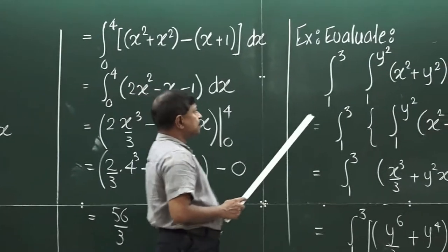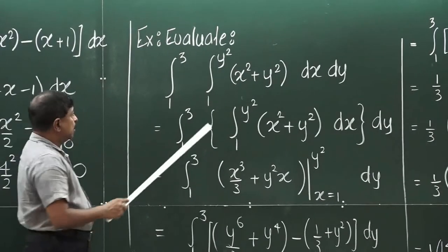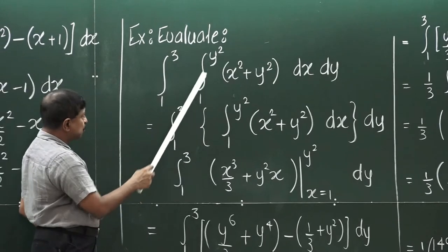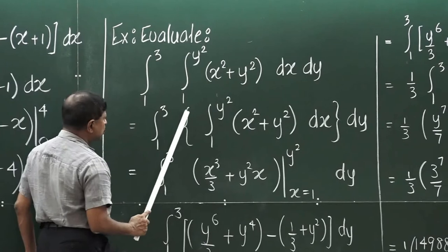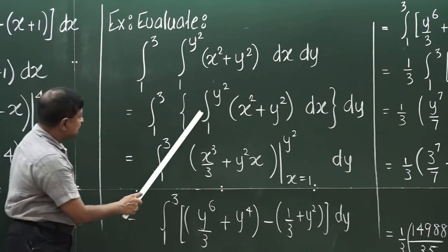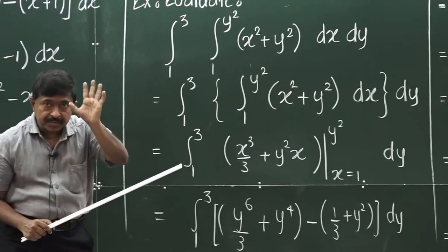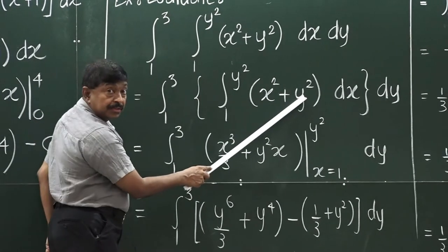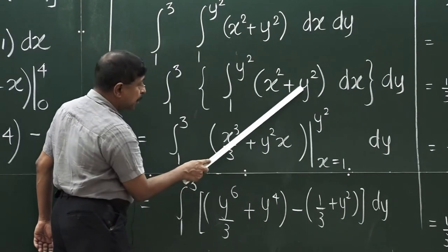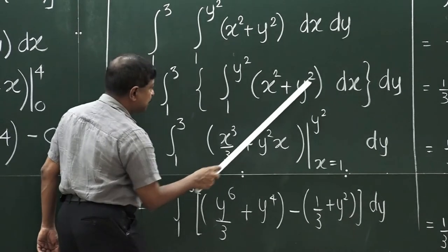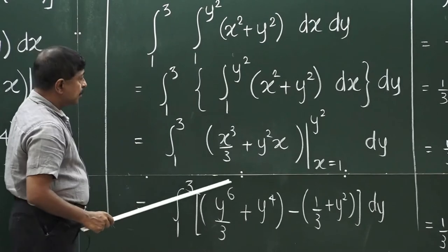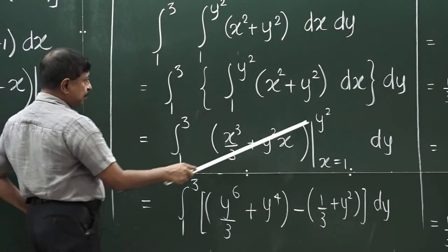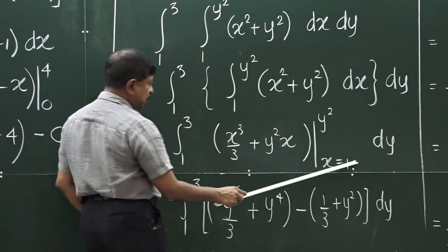Now the third example — the integrand again has both variables. Here the first variable is x, so you may expect some y in the limits of that integral, and indeed you have it. For clarity, introduce a pair of braces to separate the integrals. The variable is x, so the integral of x³ is x³/3. Since x is the variable of interest, keep y as a constant, giving y²x. The limits are from 1 to y². Plug in y² for x to get y⁶/3. Plug in y² for the second term to get y⁴. When you plug in 1, you get one third and y².